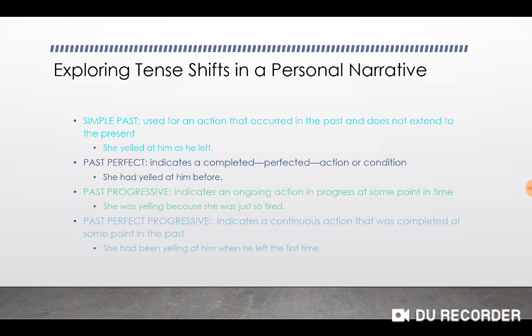The last one is the past perfect progressive, which indicates a continuous action that was completed at some point in the past — so a continuous action, but the action is now done. Look at the sentence and the way the verb phrase changes: 'She had been yelling at him when he left the first time.' 'Had been yelling' is your verb phrase. 'Yelled' moves to 'yelling' — just like the past progressive — because you need the -ing ending to show continuous ongoing action. Then you have 'had been,' which combines the 'had' from the past perfect and 'been,' which carries the past tense.